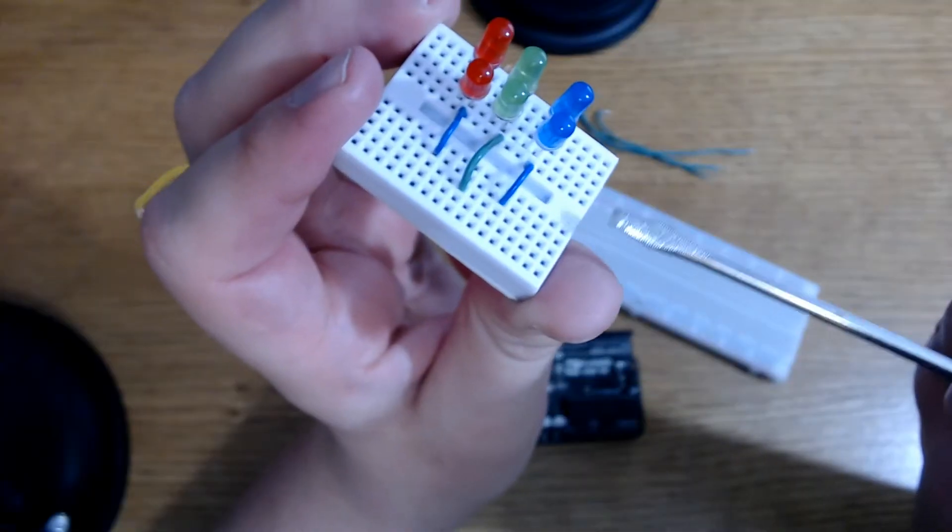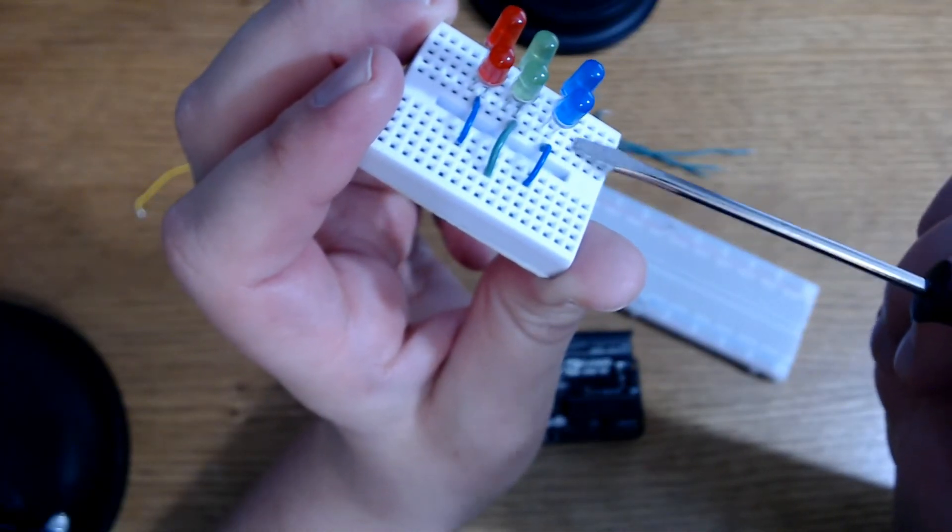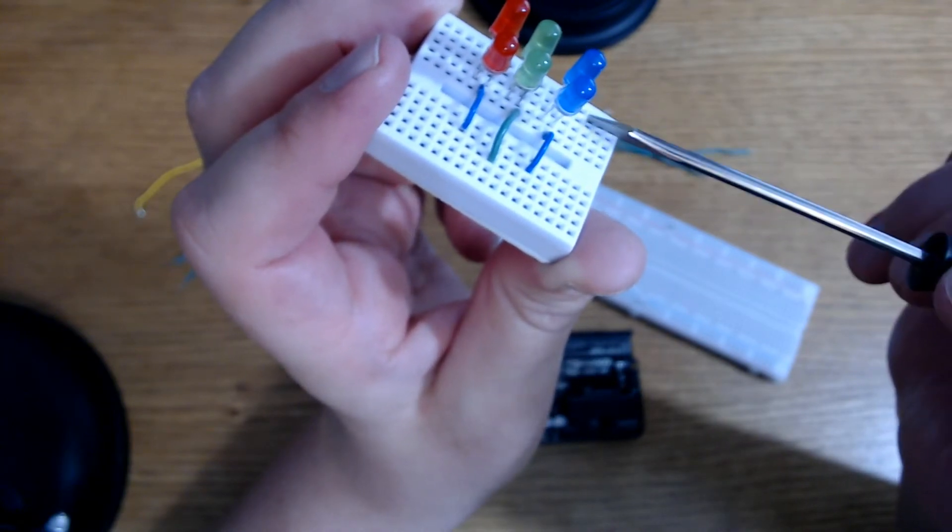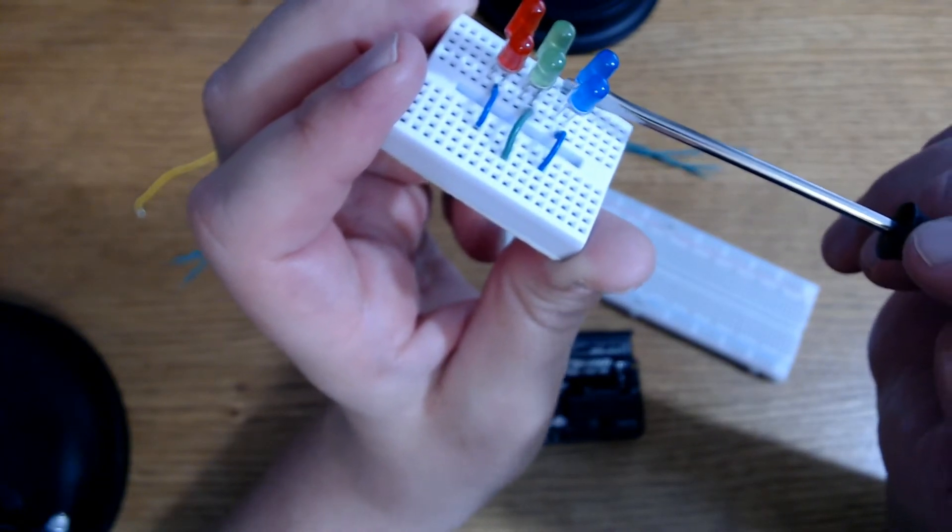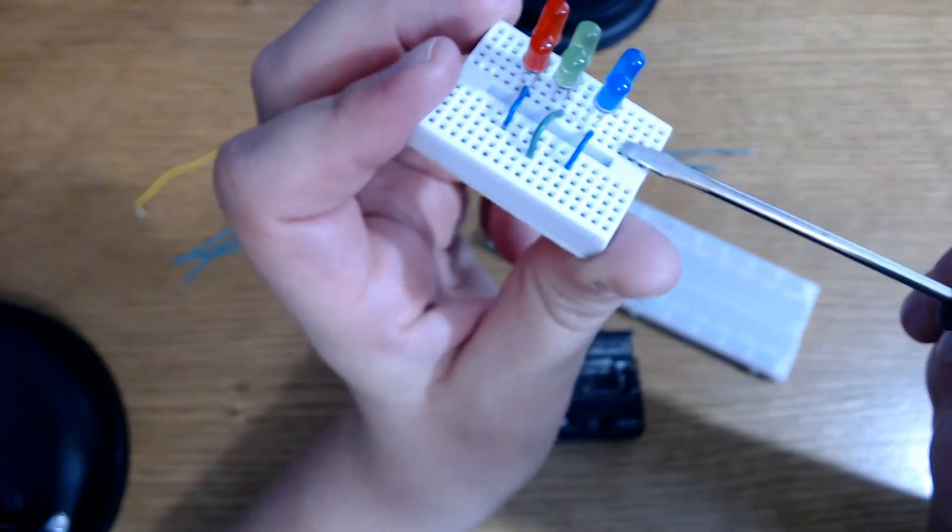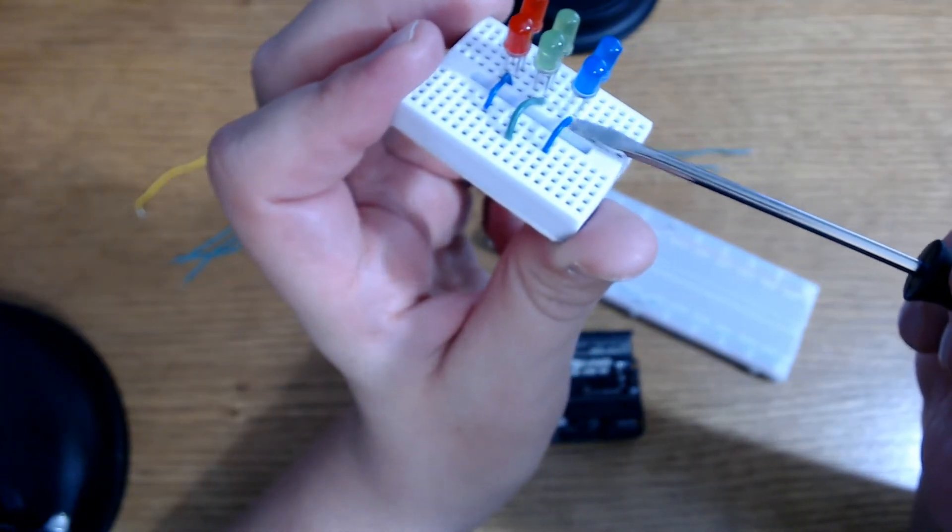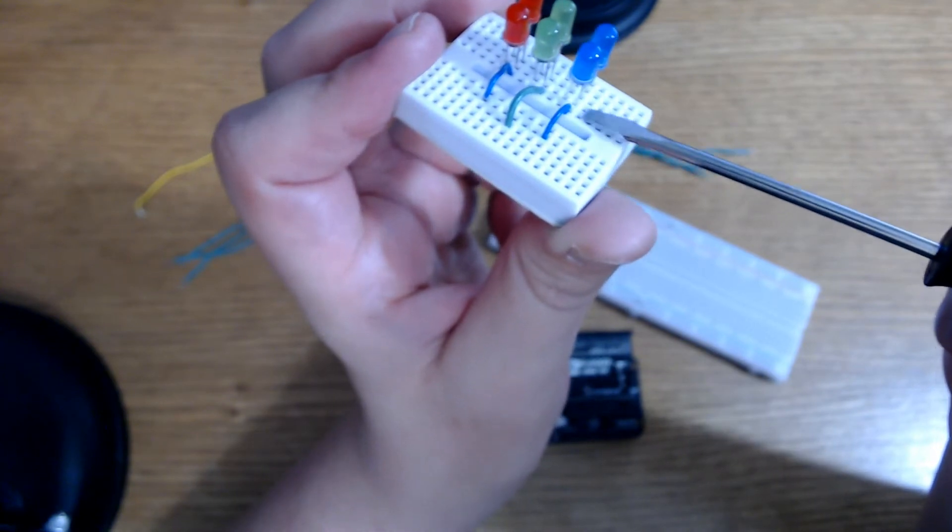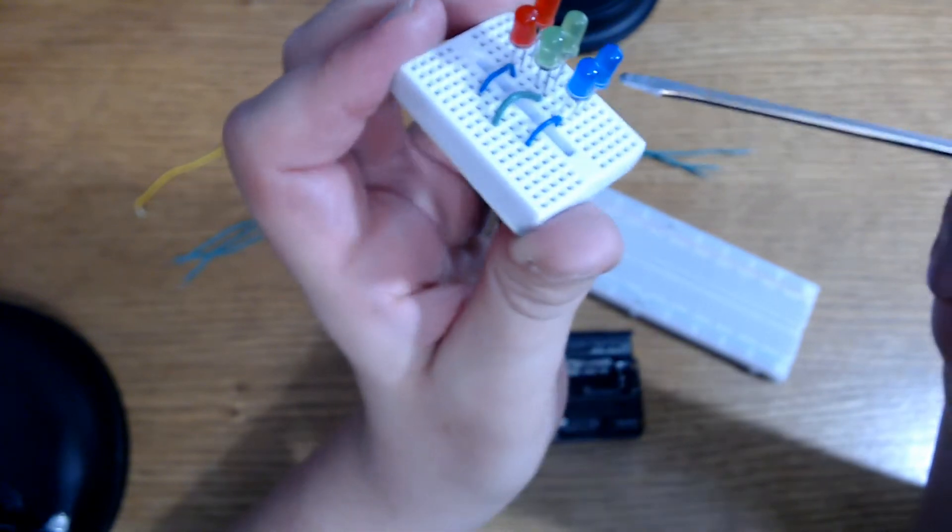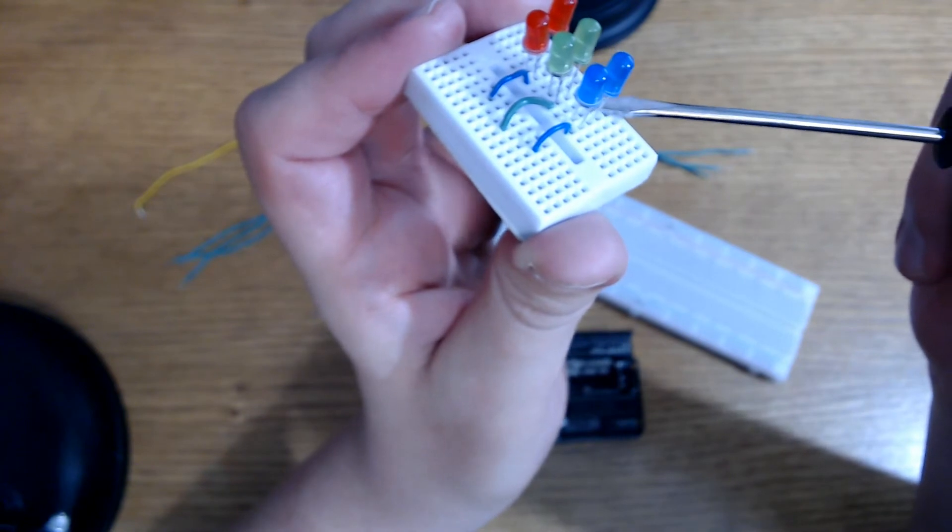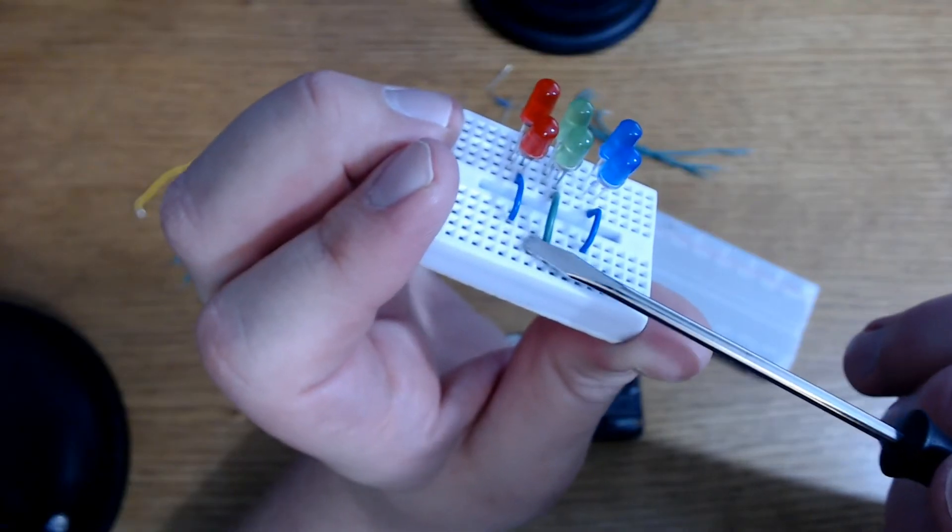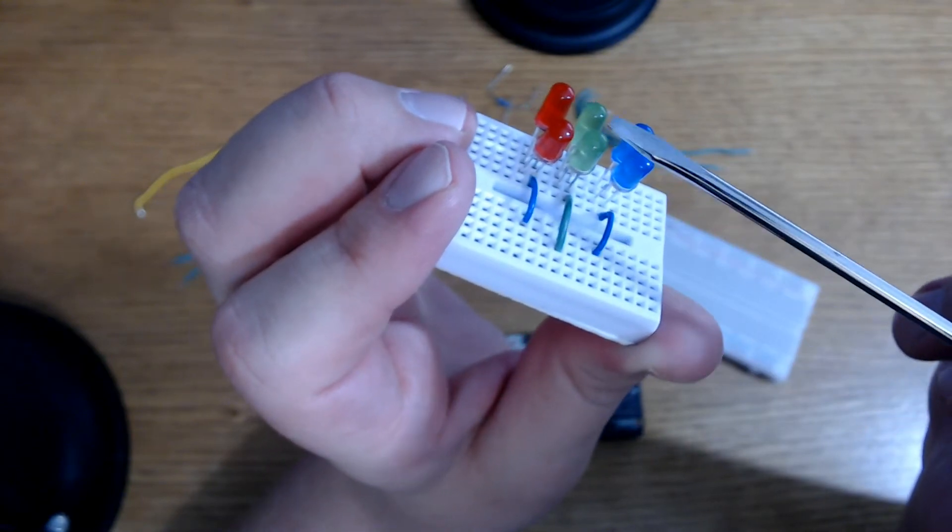So the way this works is that these rows are connected, these holes right here, and these are connected, but they're not connected that way. So because I put the positive pin in this row for both of these LEDs, both of those positive pins are connected, as well as the negative pin on the other side. And I did that for each color. And these wires are connected to the positive pins of each of these colors.